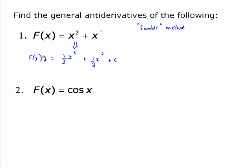Now let's go on to a trig one. Big F of x is cos x. So you've got to think: if the derivative is cos x, what is the original function? So little f of x is equal to the sine of x plus c, because the derivative of sine is equal to cosine. If you're not sure, differentiate your answer and see if it takes you back to where you started.